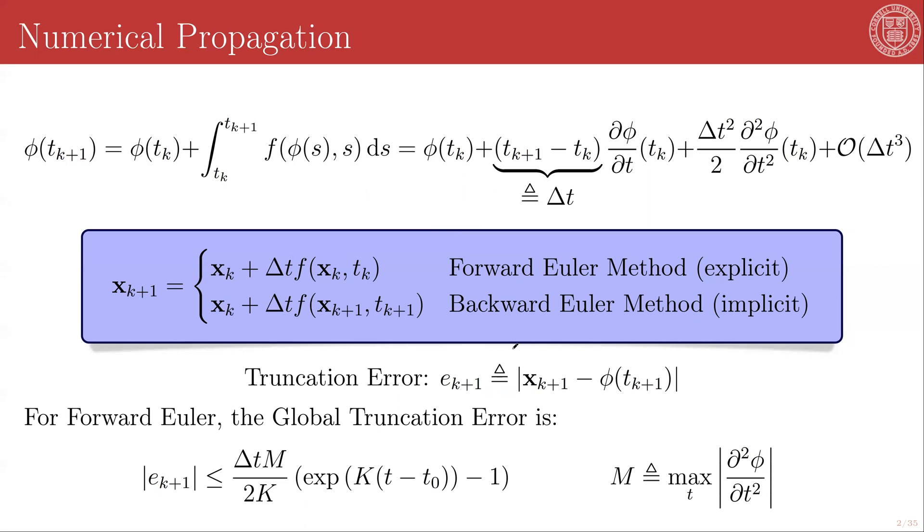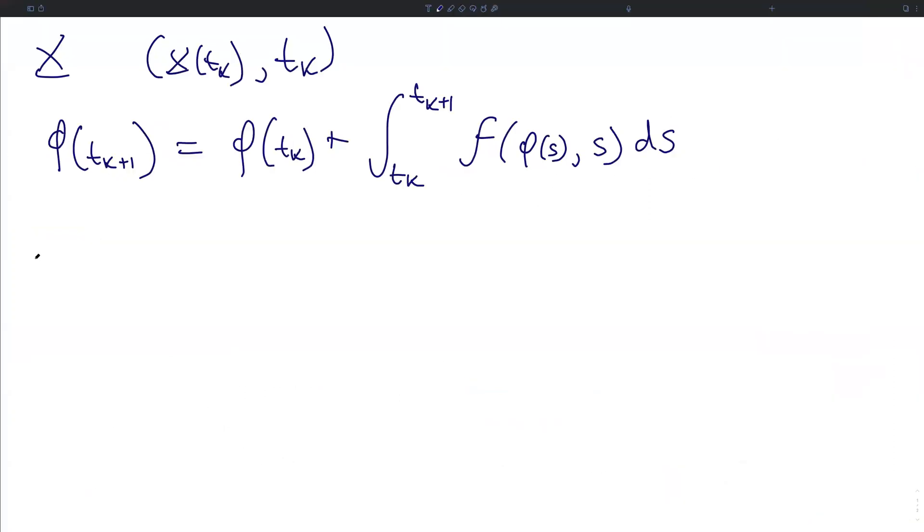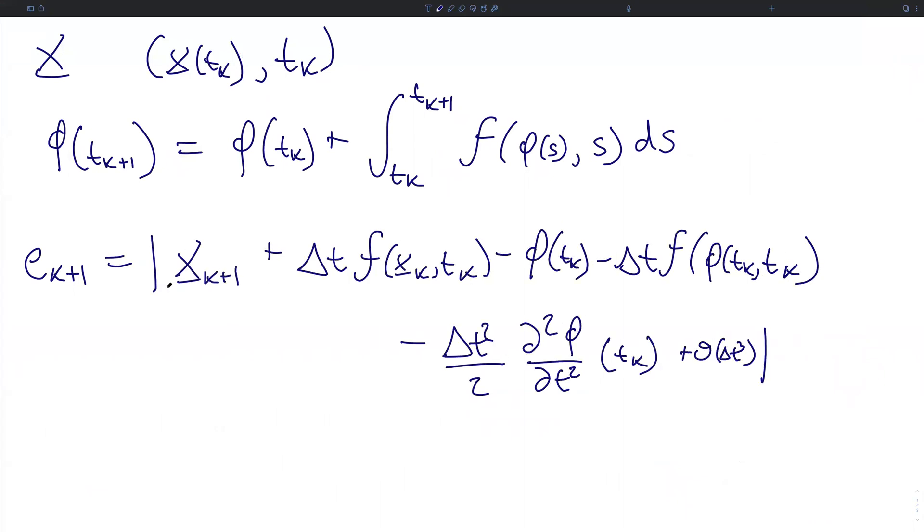Now, for the Forward Euler method, we can thus write the local truncation error as the absolute value of xₖ₊₁ + Δt·f(xₖ, tₖ)—so this is what our Forward Euler method is producing for the next step—and then we are subtracting the expansion of the true solution: minus φ(tₖ) minus Δt·f(φ(tₖ), tₖ) minus Δt²/2·∂²φ/∂t² evaluated at tₖ plus the higher order terms, which we will kind of ignore from now on.